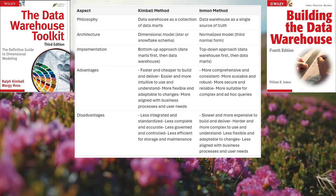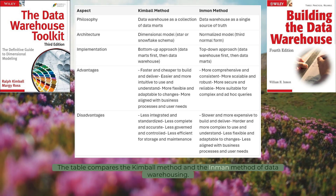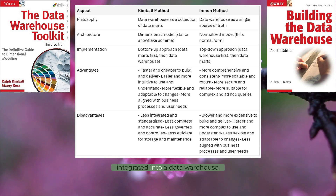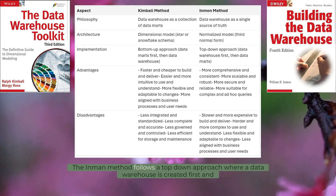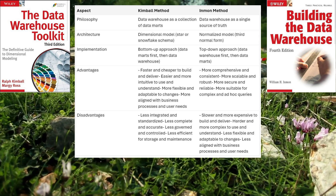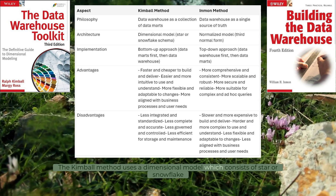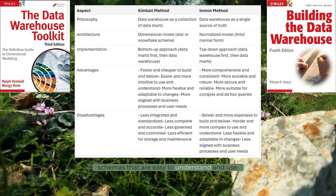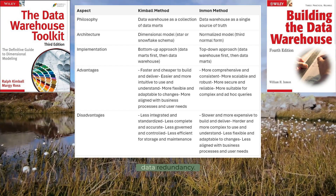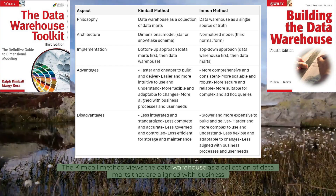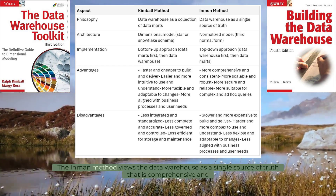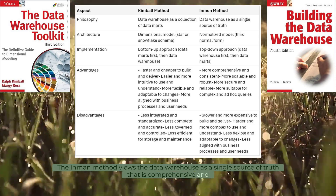Comparing the two methods: the Kimball method follows a bottom-up approach, where data marts are created first and then integrated into a data warehouse. The Inman method follows a top-down approach, where a data warehouse is created first and then data marts are derived from it. The Kimball method uses a dimensional model consisting of star or snowflake schemas that are easy to understand and use, while the Inman method uses a normalized model in third normal form that eliminates data redundancy. The Kimball method views the data warehouse as a collection of data marts aligned with business processes, whereas the Inman method views it as a single source of truth that is comprehensive and consistent.